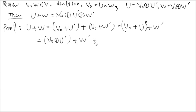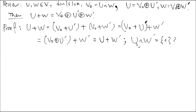This v0 direct sum u prime has a simpler name — that was just u. So I'm going to replace it with u plus w prime. All you have to explain now is why the intersection of u and w prime is trivial, and then it becomes a direct sum. Something in u and also in w prime: if it is in w prime, isn't it in w anyway? So whatever is in that intersection is in u ∩ w, which is known as v0.